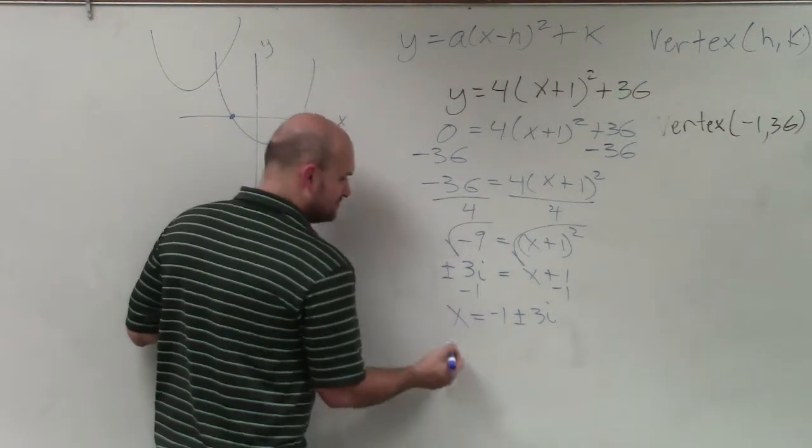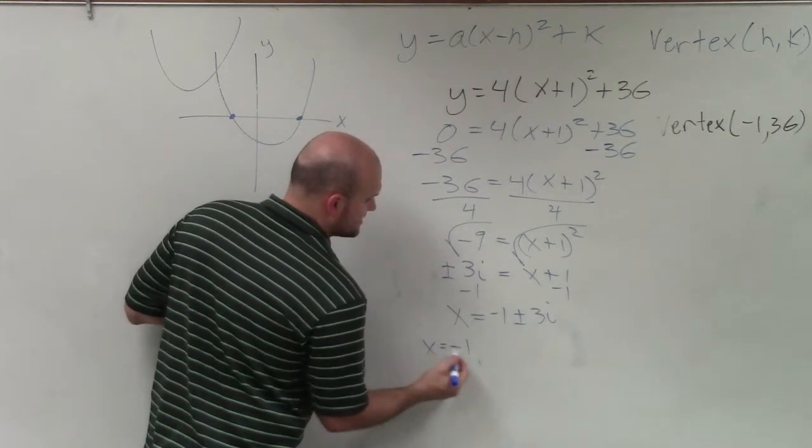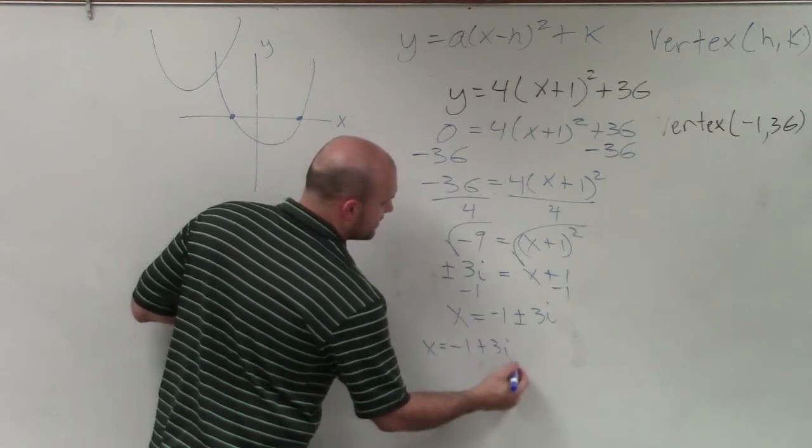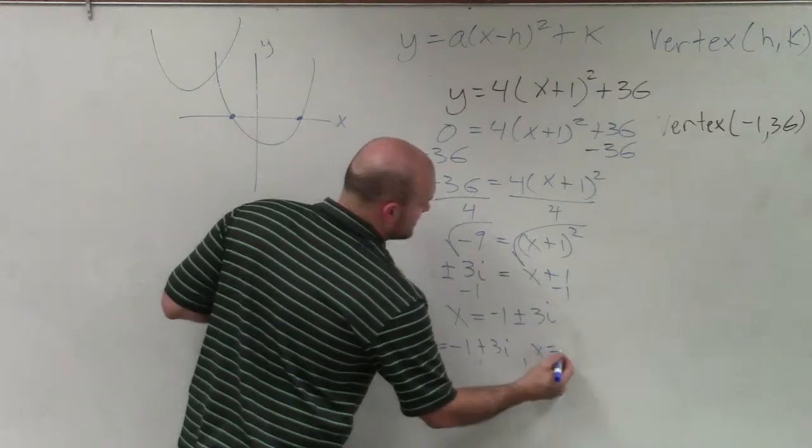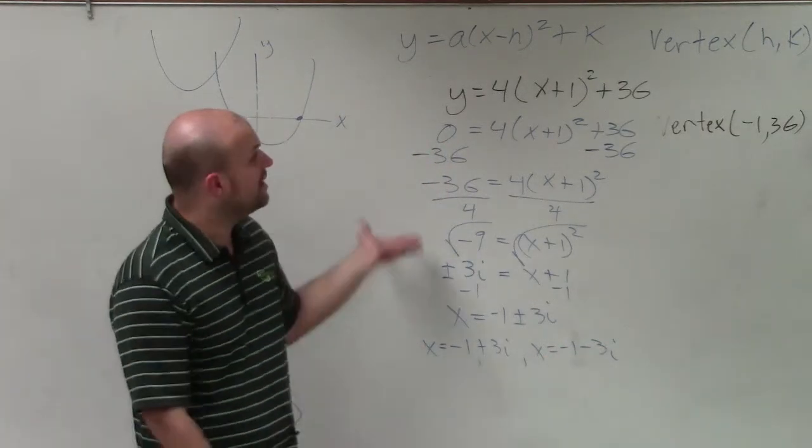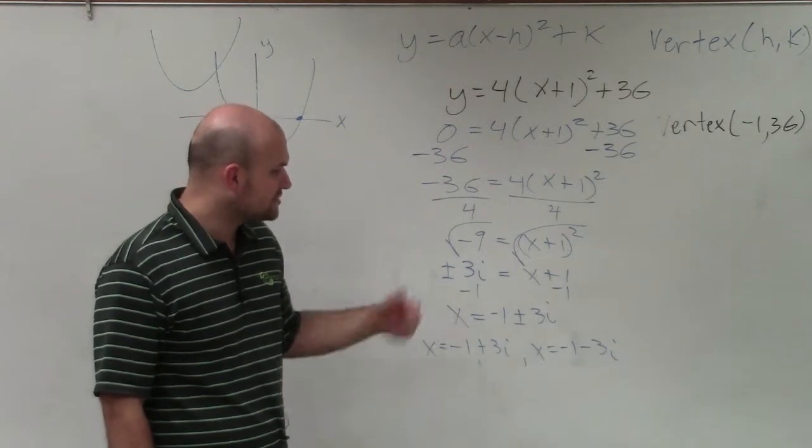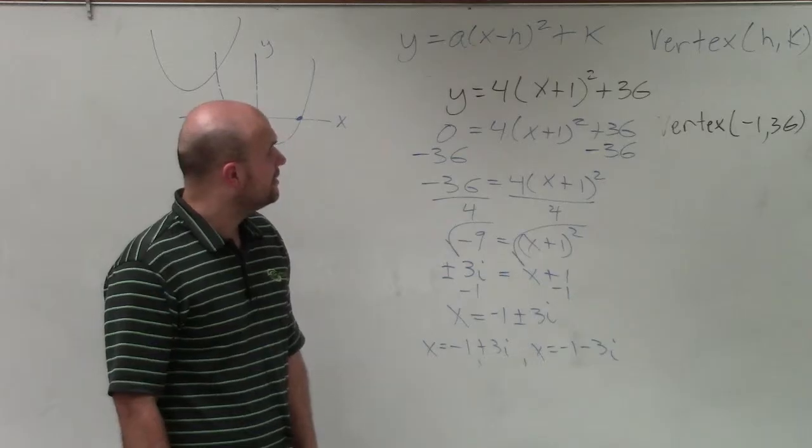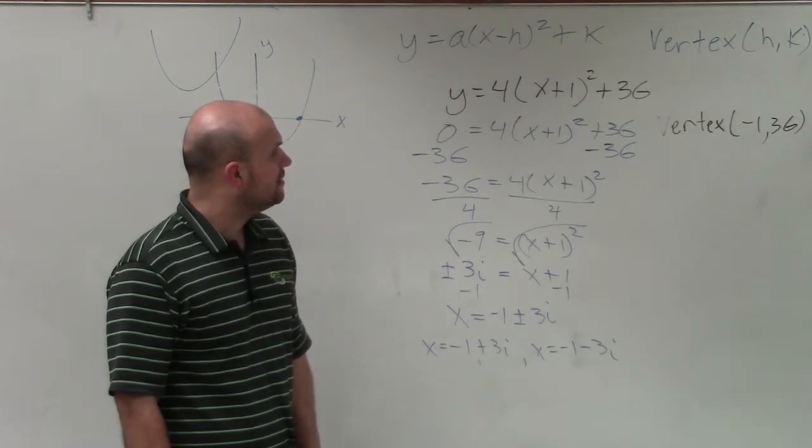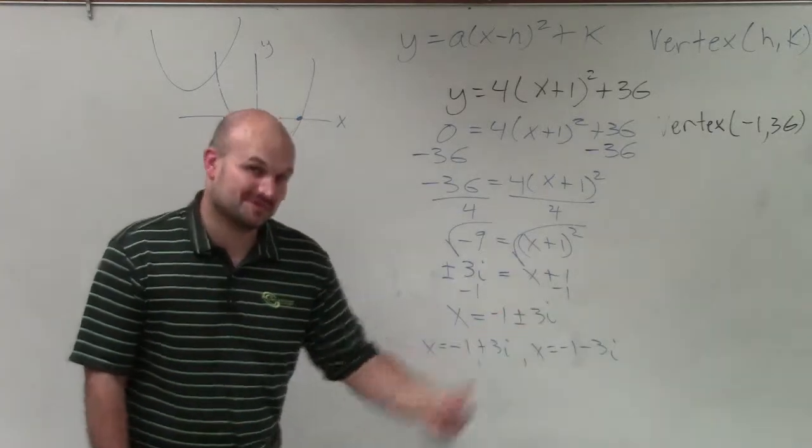We could also write them as x equals negative 1 plus 3i, and x equals negative 1 minus 3i. So there you go, ladies and gentlemen. And that is how you find the vertex as well as the solutions when dealing with complex numbers. Thanks.